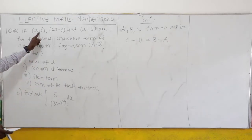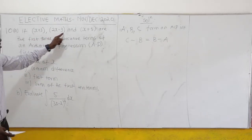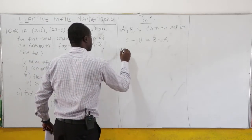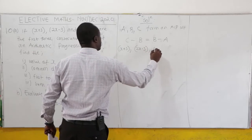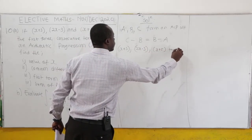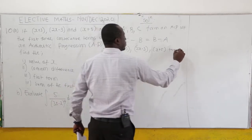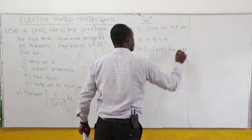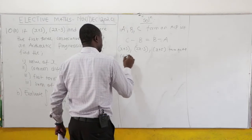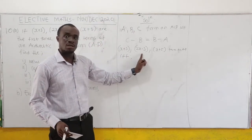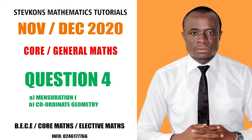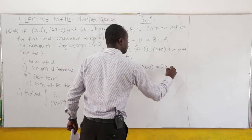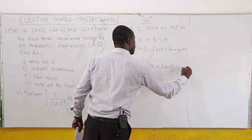So in this case, x plus 3, 2x minus 3, and x plus 5 form an AP if and only if c minus b equals b minus a. That is: x plus 5 minus (2x minus 3) equals 2x minus 3 minus (x plus 3).